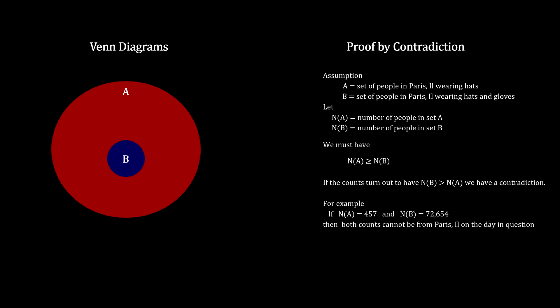For example, this violation could happen if the count for hats was indeed taken in Paris, Illinois, but the count for hats and gloves was taken in Paris, France.